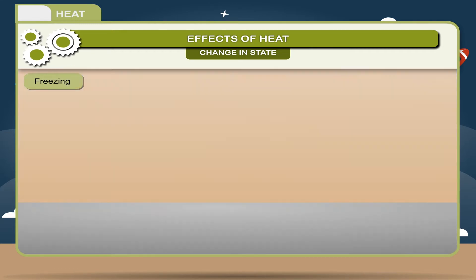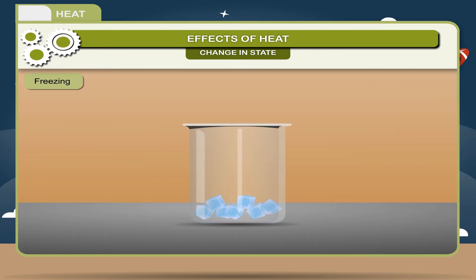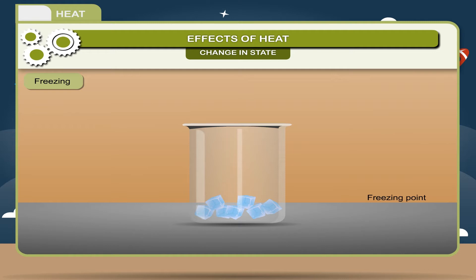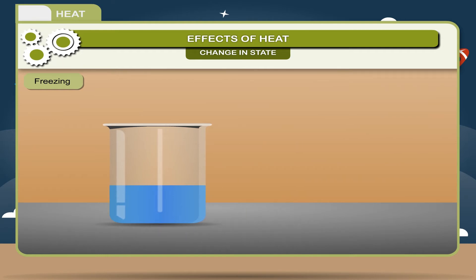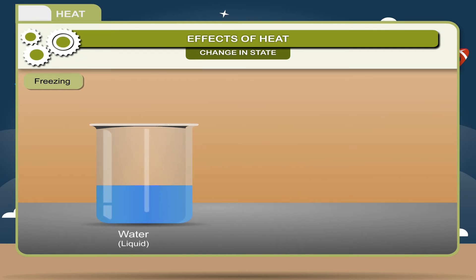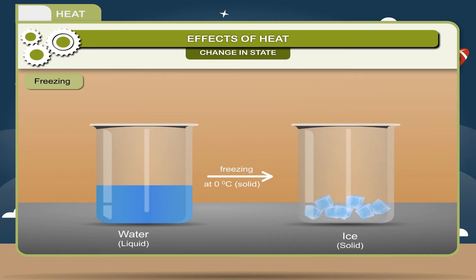Freezing: Freezing is a process in which a liquid changes into solid by giving out heat at a constant temperature. The temperature at which freezing takes place is called the freezing point. For example, the freezing point of water is 0 degree Celsius. Water, a liquid, freezing at 0 degree Celsius, gives rise to ice, a solid.